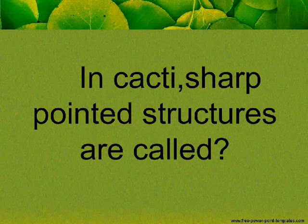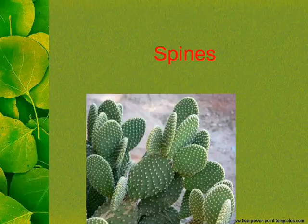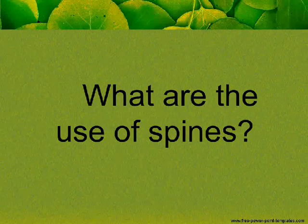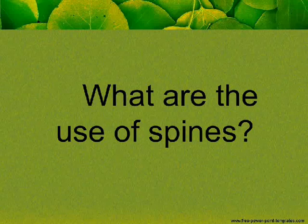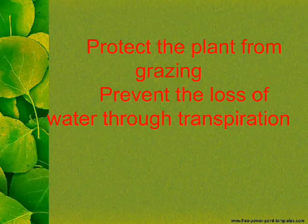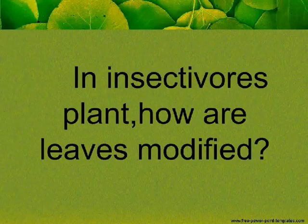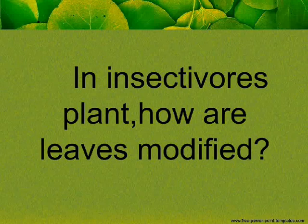In cacti, sharp-pointed structures are called spines. What are the uses of spines? Spines protect the plant from grazing and prevent the loss of water through transpiration. In insectivorous plants, how are leaves modified?